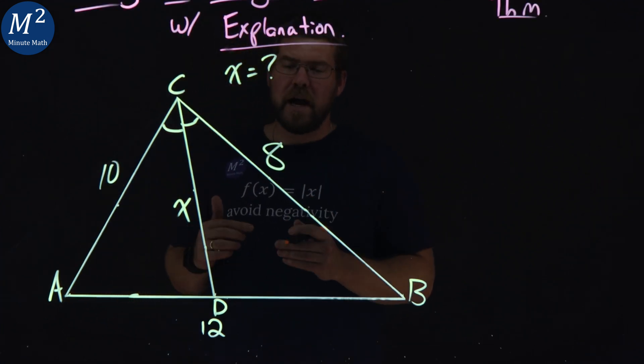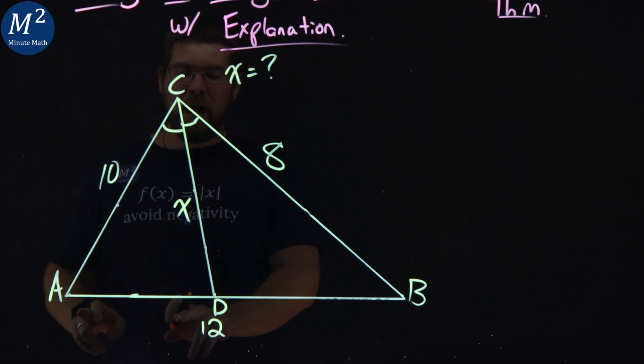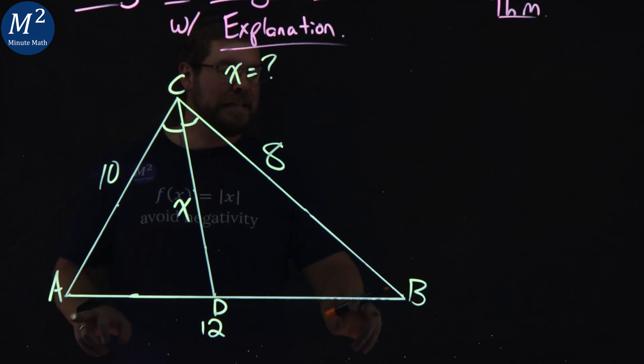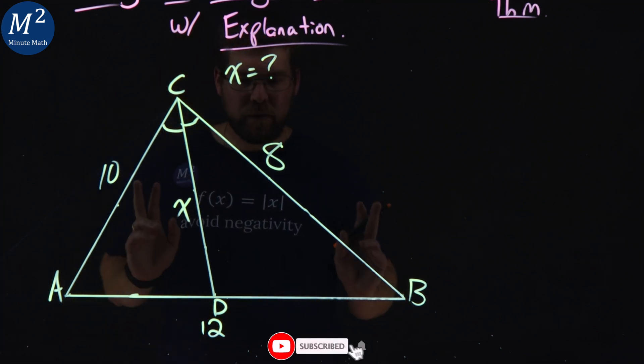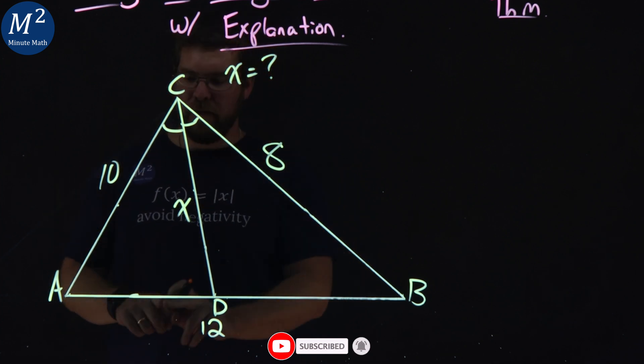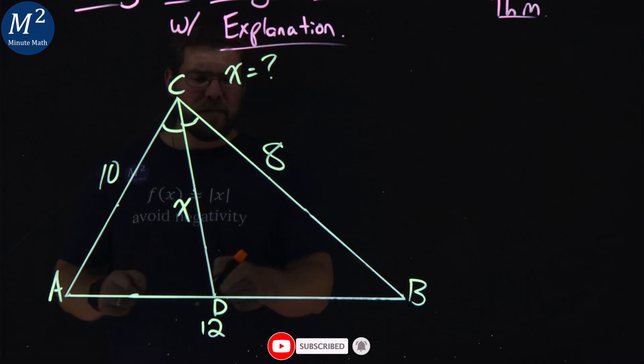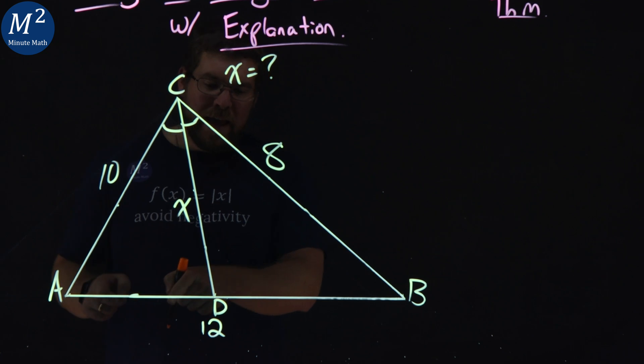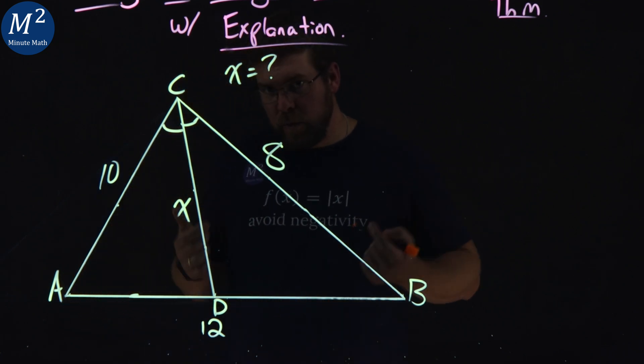So the first thing I want to do here with this problem, I'm going to set a value here from AD and D to B. We know the 10 and 8 and the overall here is 12, but these individual ones, we know down here that AD plus DB equals 12.